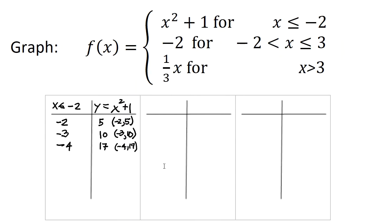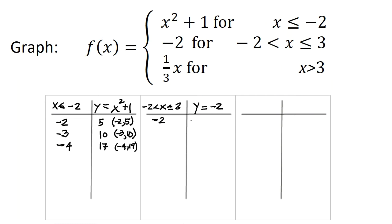Next, I'll have to consider where x is between negative 2 and 3 — so negative 2 is strictly excluded, up to and including positive 3. When that's true, y is always negative 2, it's a constant. So the endpoint at x equals negative 2 gives the point negative 2, negative 2, but because it's strictly less than, I can't include that point. In the middle, when x is 0, y is negative 2, so that's the point 0, negative 2. And for the included endpoint when x is 3, y is negative 2, so I have 3, negative 2.